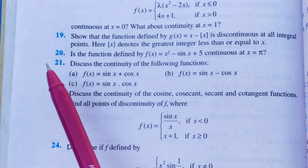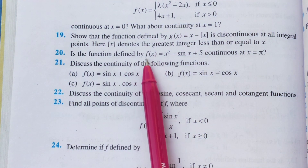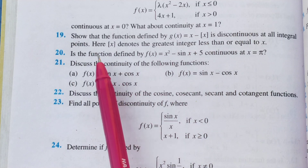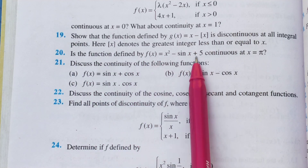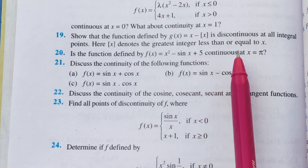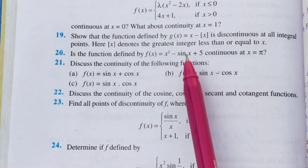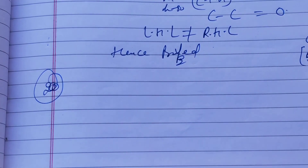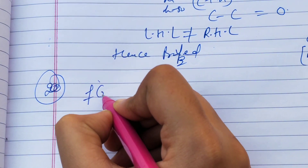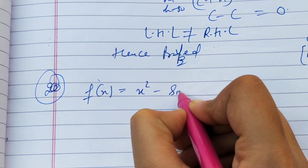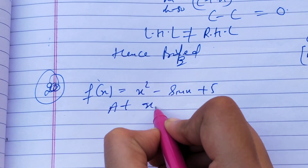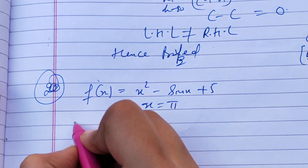Now question number 20: is the function defined by f of x equals x squared minus sin x plus 5 continuous at x equals pi? To check continuity, we verify the left-hand limit, right-hand limit, and function value are all equal. The given function is f of x equals x squared minus sin x plus 5, and we check at x equals pi.